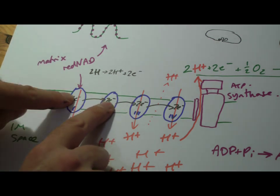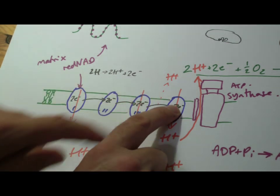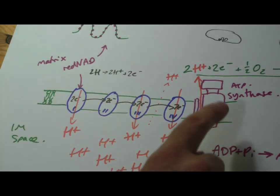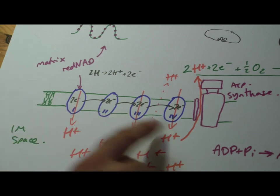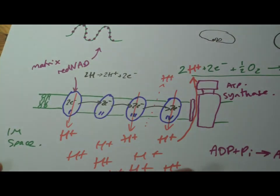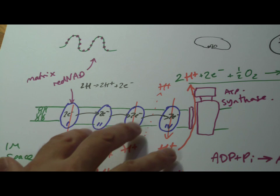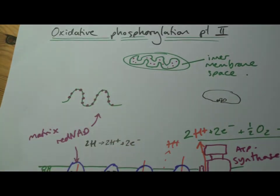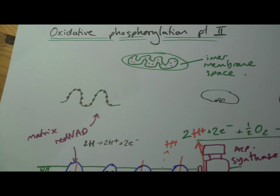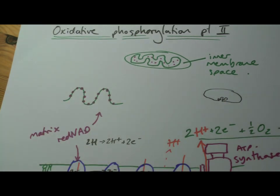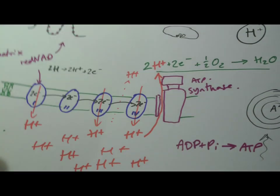That becomes reduced, that becomes oxidized, that becomes reduced, that becomes, sorry, reduced, oxidized. And so you've got a continual chain of these complexes becoming reduced and oxidized. And that's where the energy is coming from. That's why it's called oxidative phosphorylation. And refer to these complexes as being oxidized and reduced as they've passed along. Because that's what's happening to them.